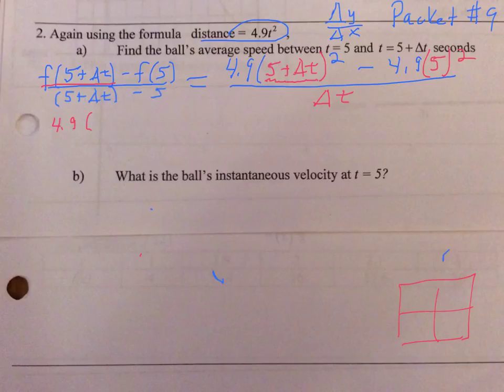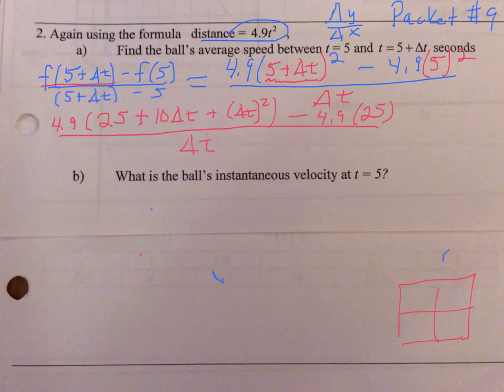But the result of that is going to be 25 plus 10 delta t plus delta t squared. And then I'm going to have minus 4.9 times 25, and all of this is still over delta t.